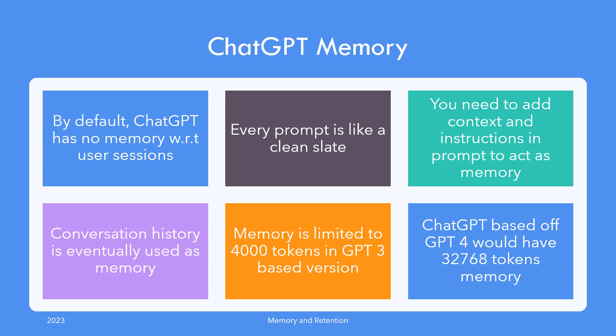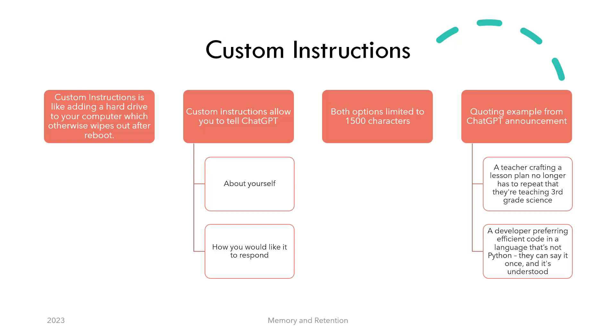It's your job to add context and instructions to get meaningful interactions from ChatGPT. We won't be repeating that in detail here, except that the context window used by GPT-3 is limited to 4,000 tokens, but GPT-4-based versions would get a major upgrade of 32,768 tokens.